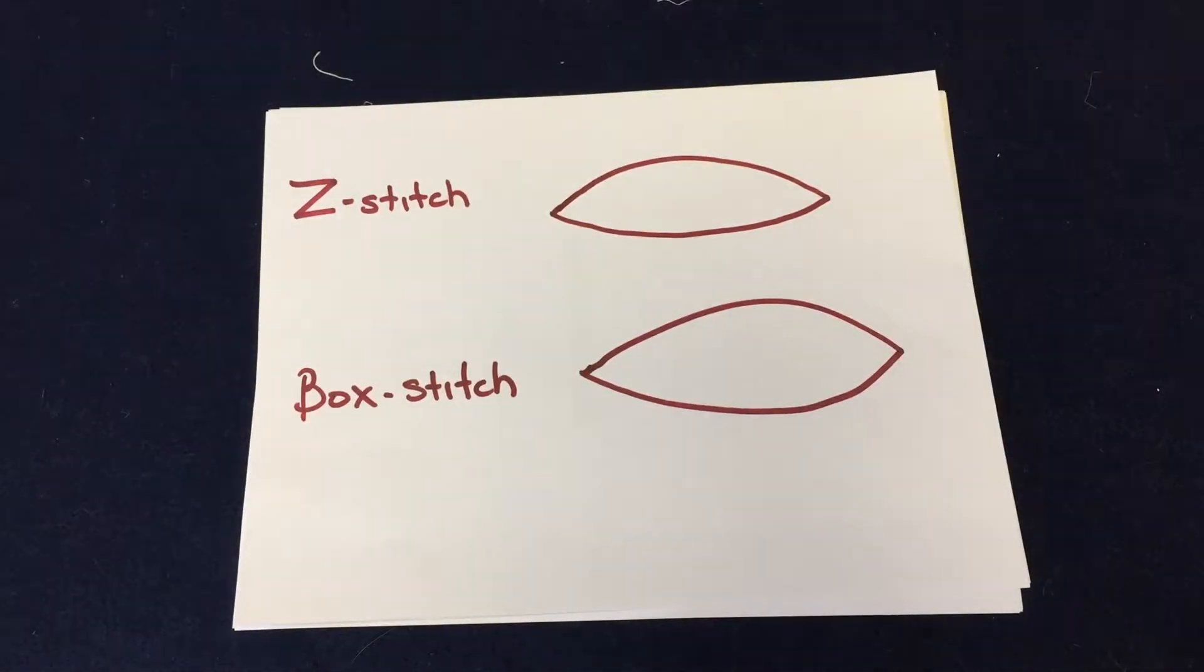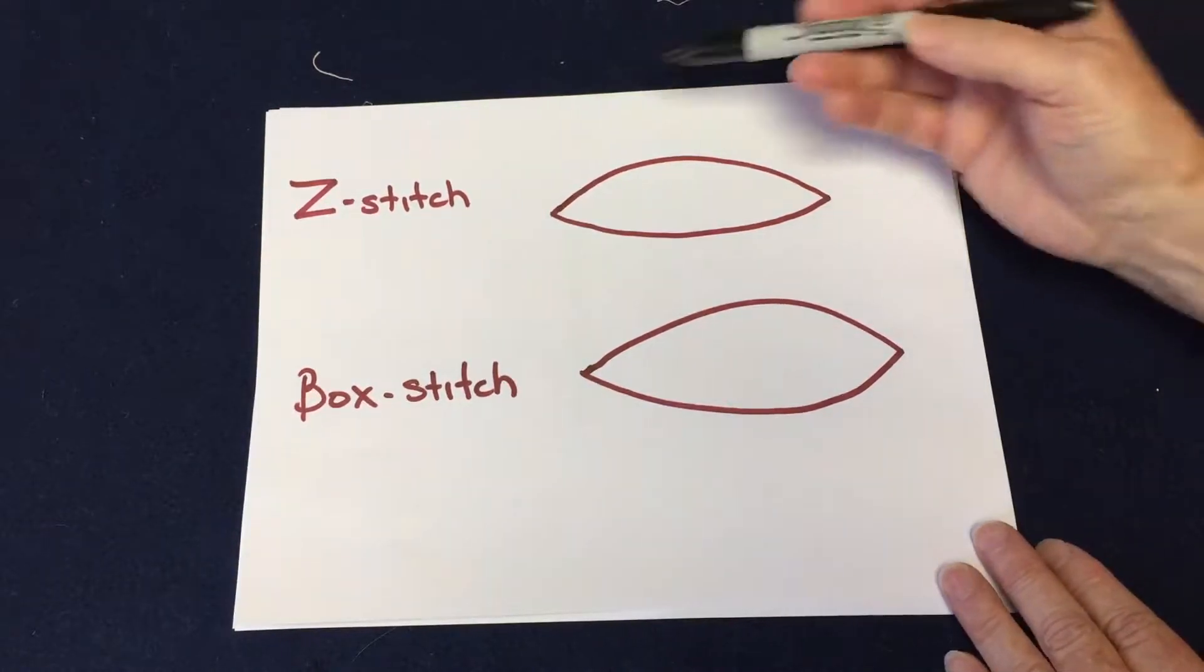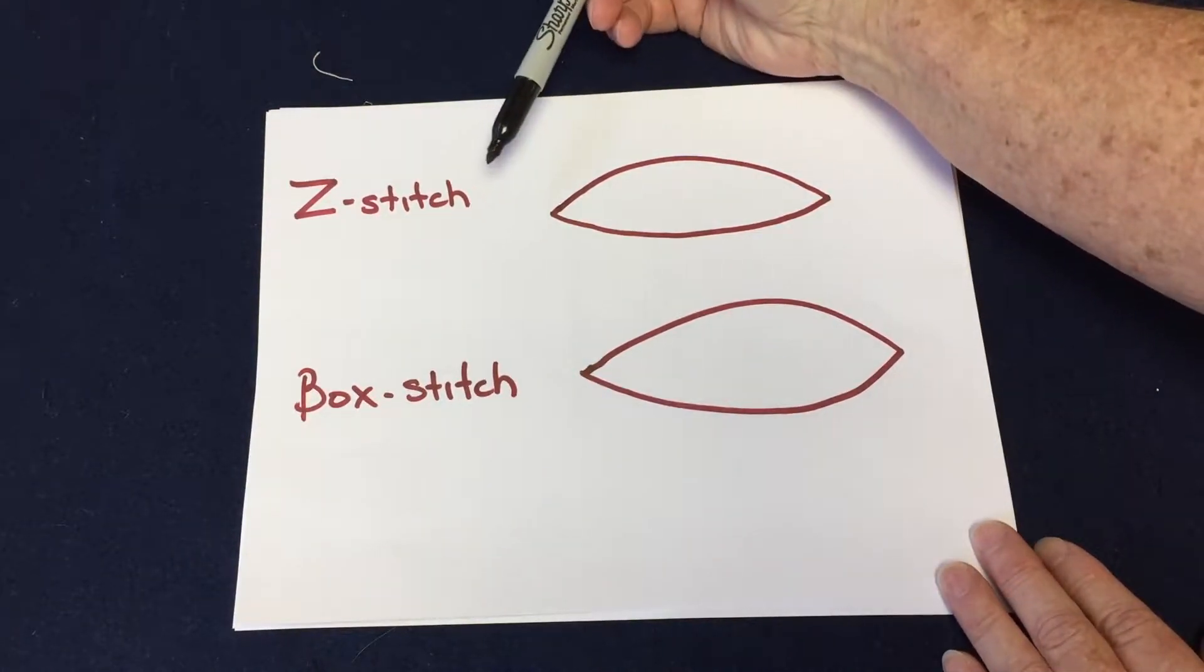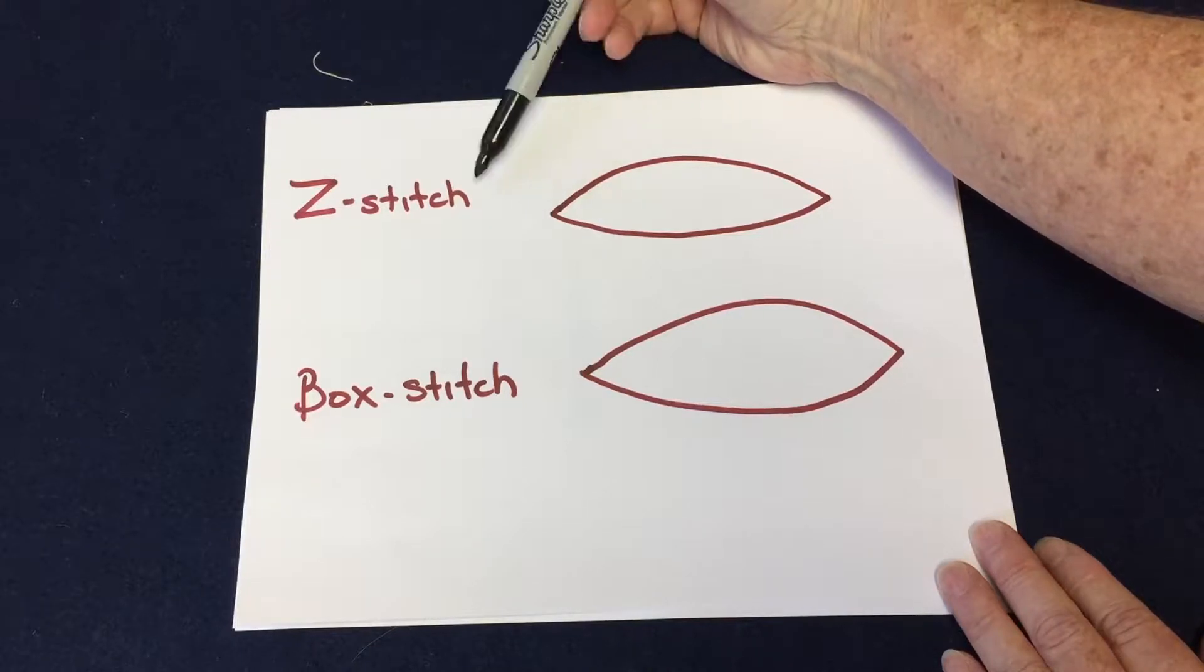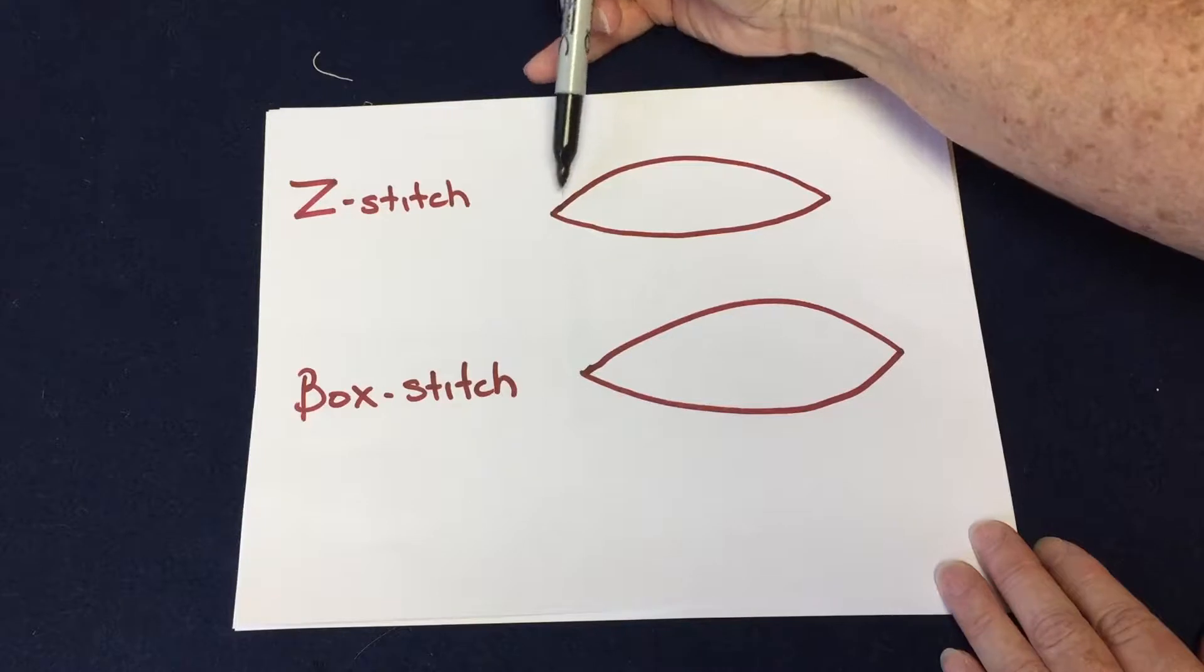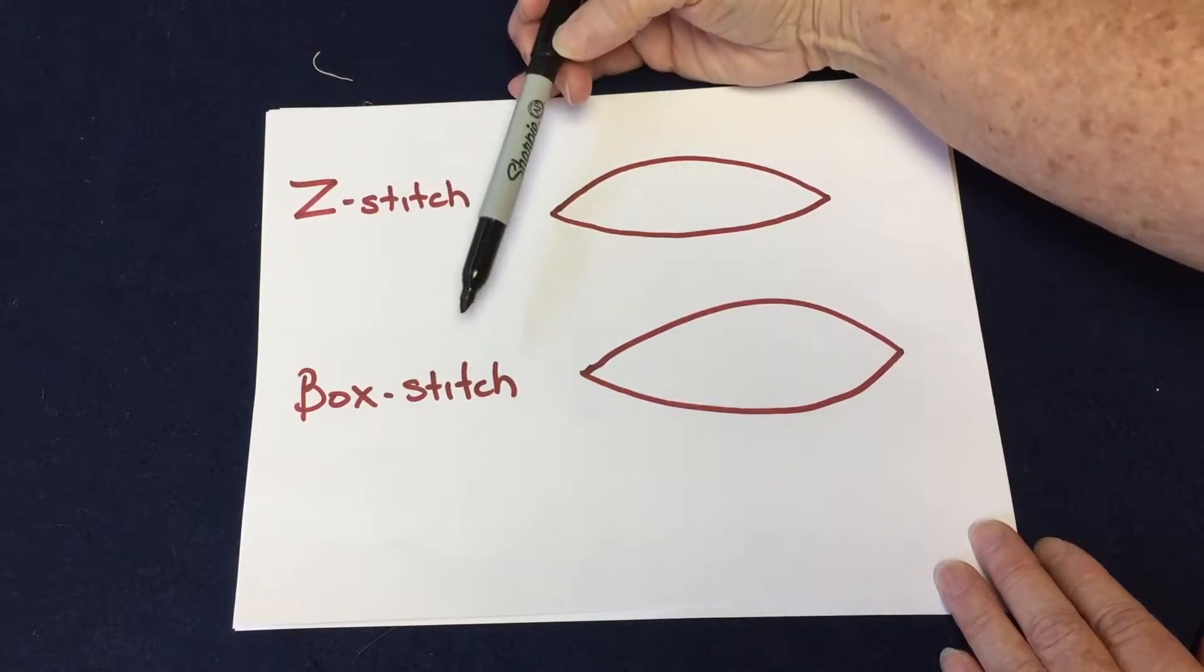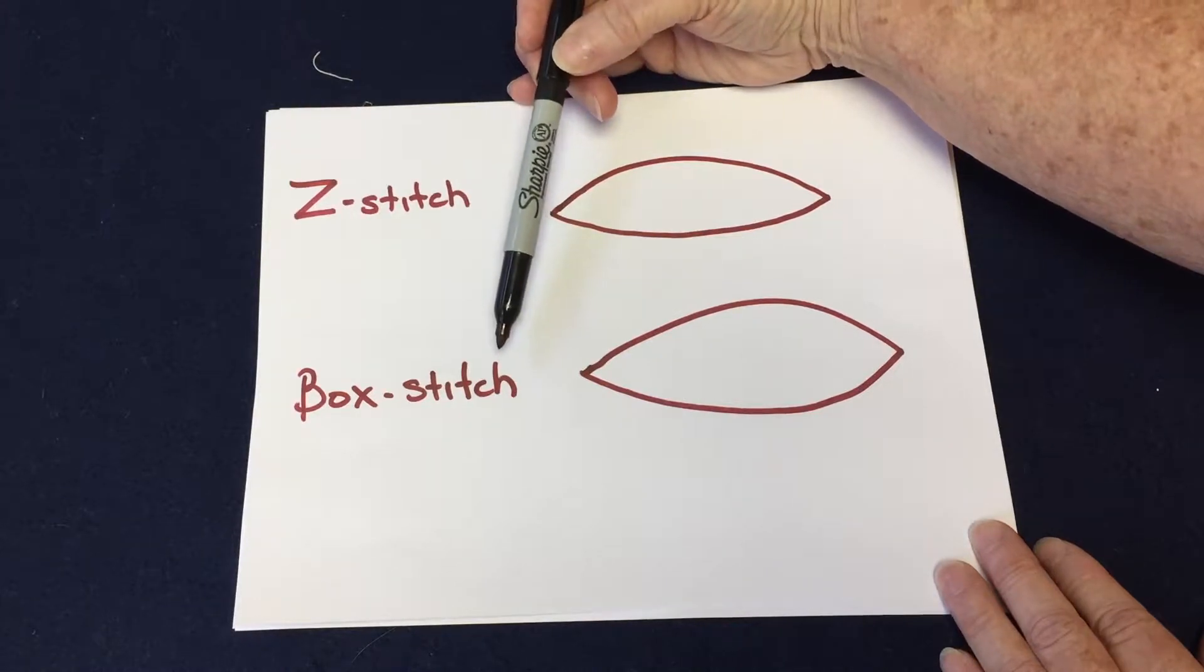So on my running subcuticular, I've given it my own name because there are two different approaches that I do for this, and so I name it according to what the suture looks like when I do it. I have the Z-stitch, which is the one I use the most, and this one will actually give you a bit of a stronger closure because it covers more of the incision. There's more suture to hold it together. The box stitch, some people use this all the time.